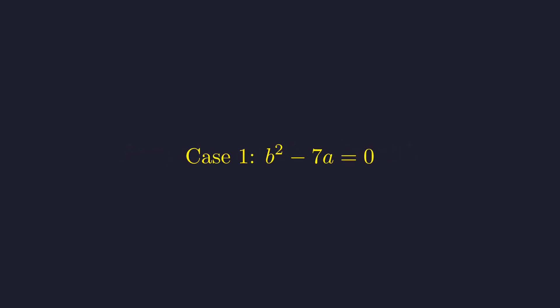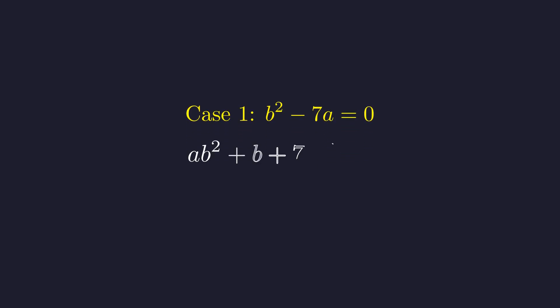We now analyze the necessary condition that d divides b squared minus 7a. The expression b squared minus 7a can be zero, positive, or negative. We will proceed with a case analysis based on the sign of this expression. Case 1: b squared minus 7a equals 0. In this case, the condition becomes that d divides 0. Since a and b are positive integers, the divisor d, which is ab squared plus b plus 7, is strictly positive. Any non-zero integer divides 0, so this condition is always met, provided b squared equals 7a.